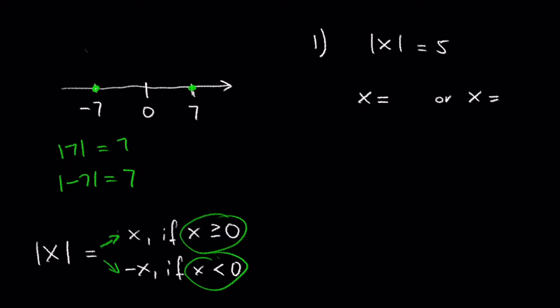Let's start with a simple example: solve the absolute value of x equals 5. We can see that x is 5 or x is negative 5. Hence, our solutions are 5 and negative 5, or the solution set is 5 and negative 5.